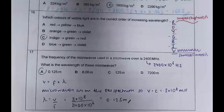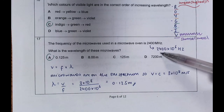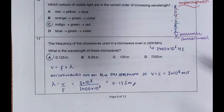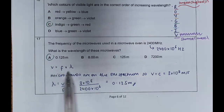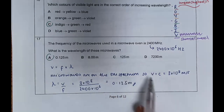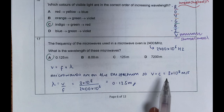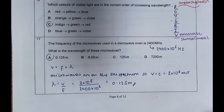In question seventeen, the frequency of the microwaves was 2400 megahertz. Mega means times a million, so 2400 × 10⁶ Hz — that has to be right to get the correct answer. Using wave speed equals frequency multiplied by wavelength (V = fλ), and knowing it's in the EM spectrum so the speed is 3 × 10⁸ m/s, rearrange for wavelength: wave speed divided by frequency. Plugging in the correct numbers gives 0.125 metres.